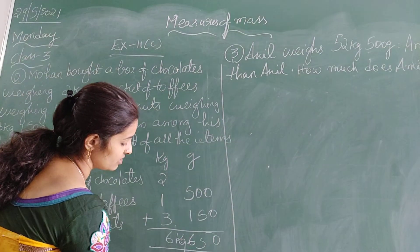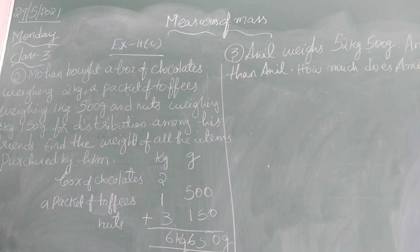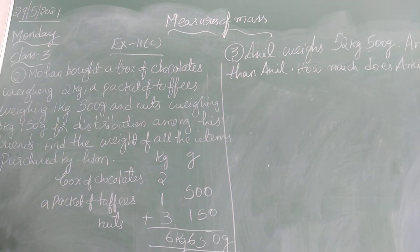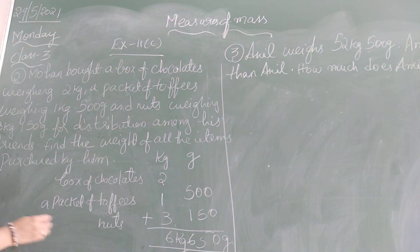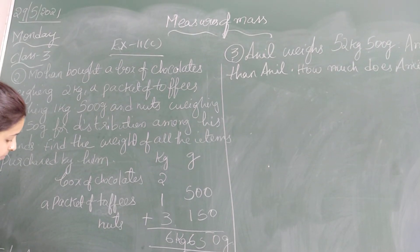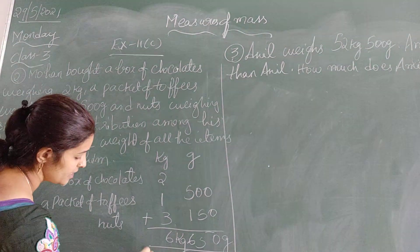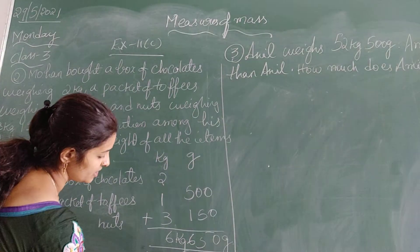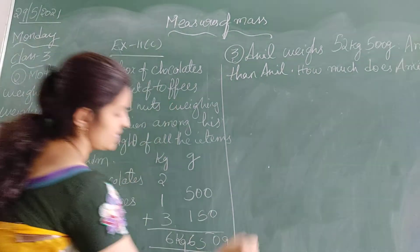The total is 6 kg and 650 grams. So the weight of all the items purchased by Mohan is 6 kg 650 grams.